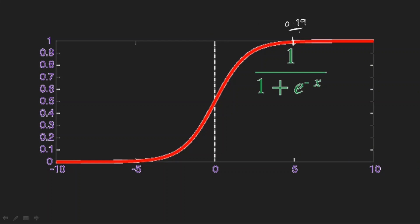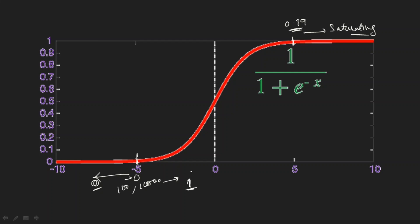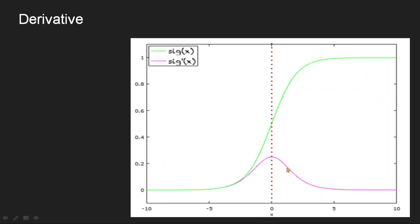However, sigmoid also has a problem. Looking at the graph, it reaches nearly 1 around x = 5 and saturates there. Similarly, around x = −5 it reaches nearly 0 and saturates. So whether the input is 100 or 1000, the output will be around 1 — it doesn't differentiate anymore. This saturation problem is similar to the step function.